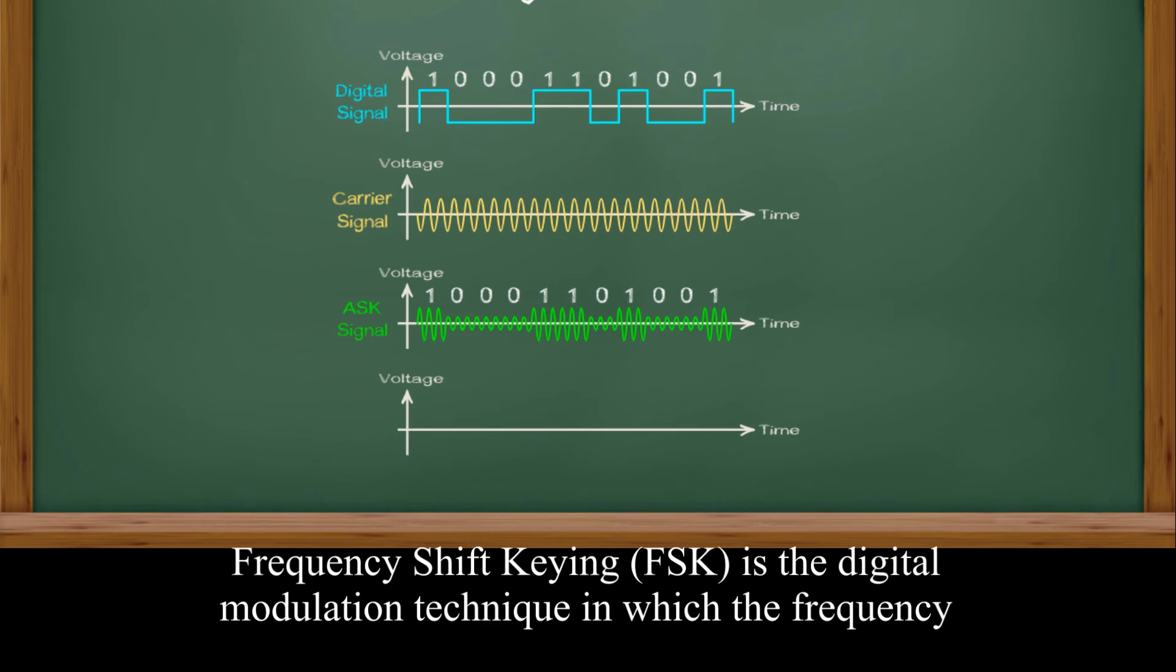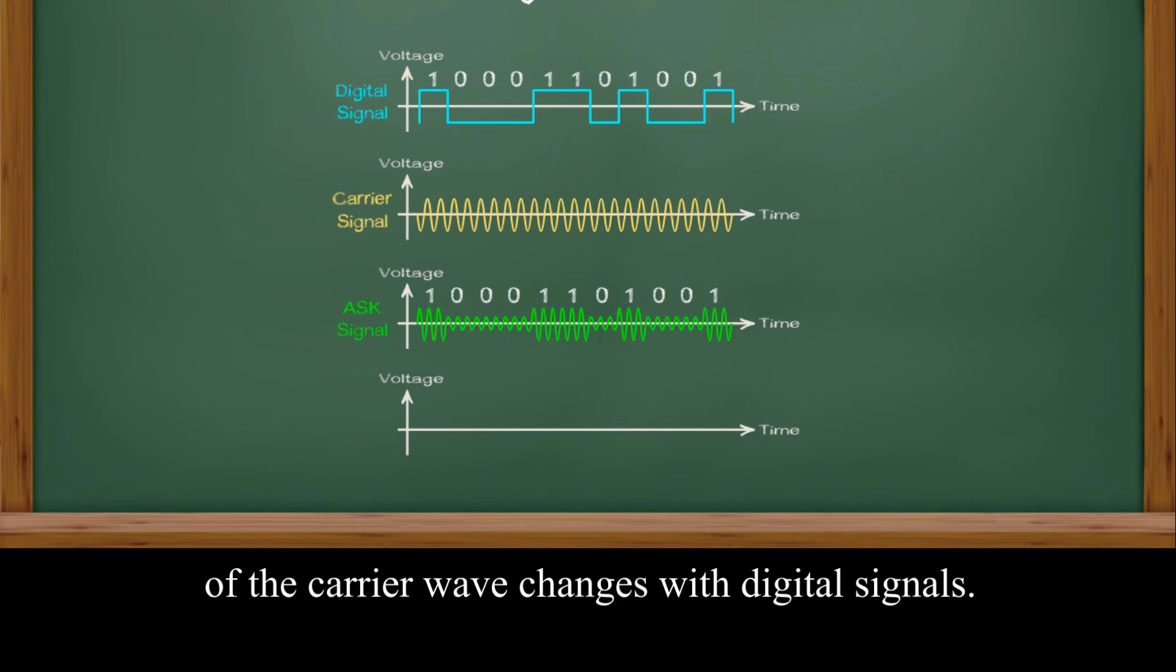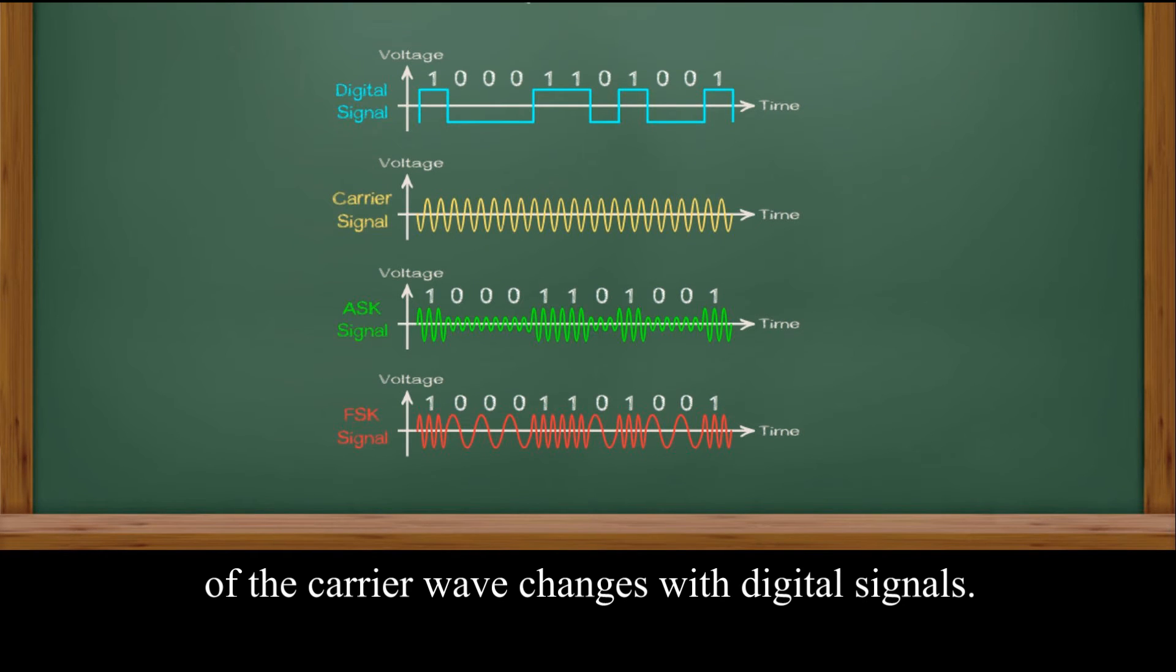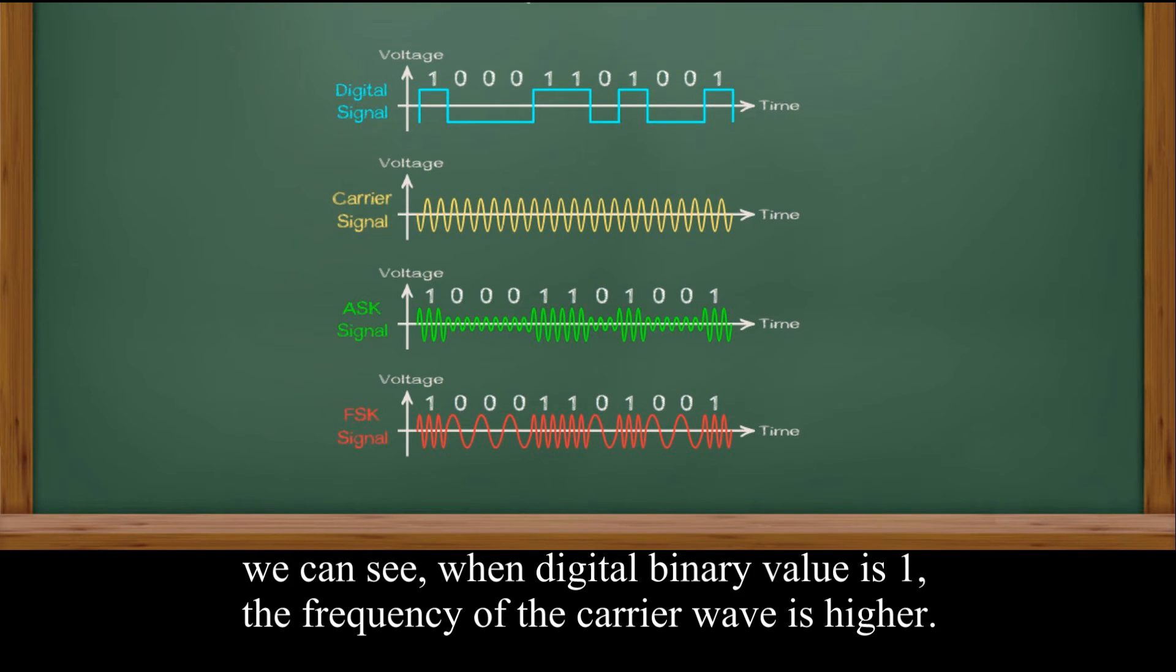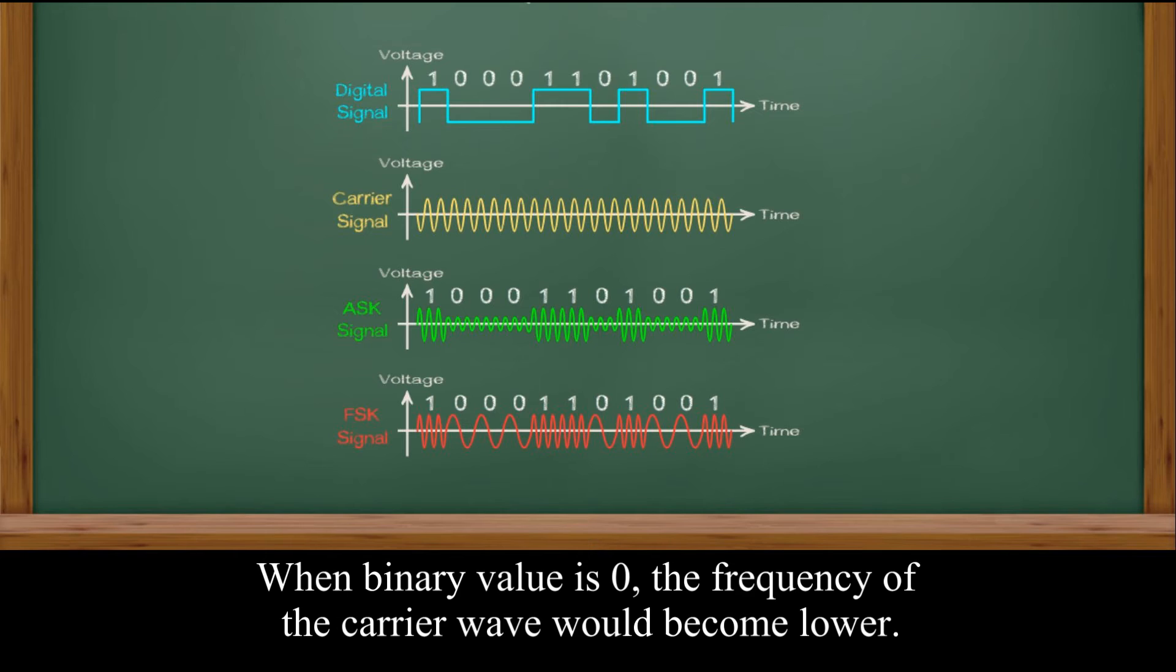Frequency shift keying is the digital modulation technique in which the frequency of the carrier wave changes with digital signals. We can see when digital binary value is 1, the frequency of the carrier wave is higher. When binary value is 0, the frequency of the carrier wave would become lower.